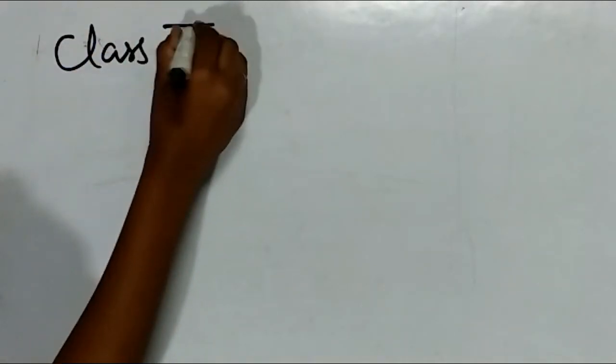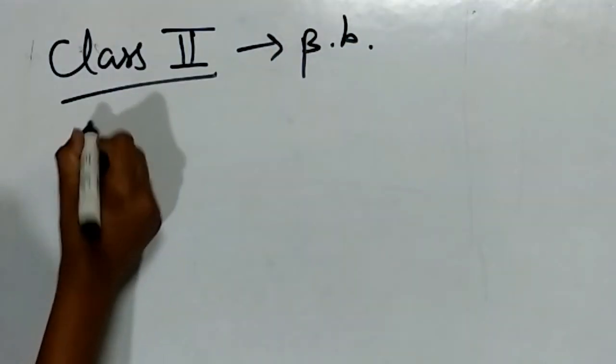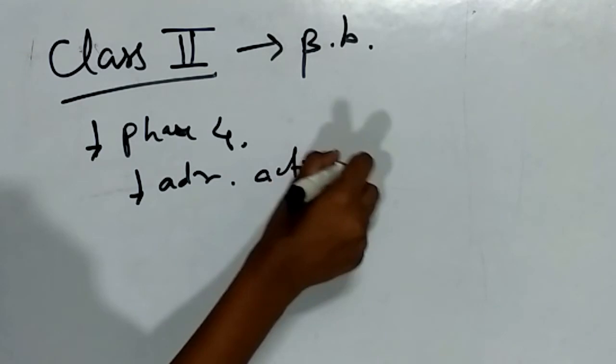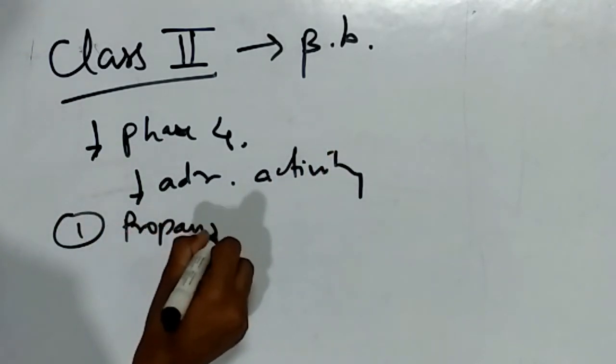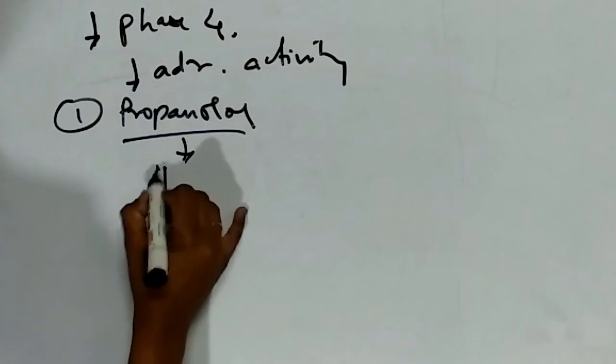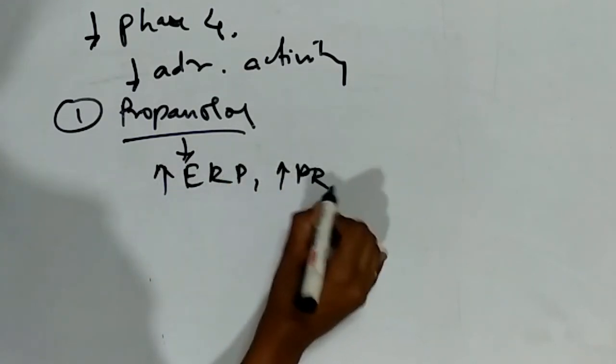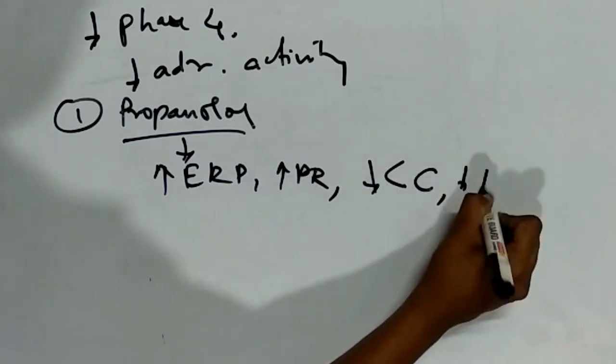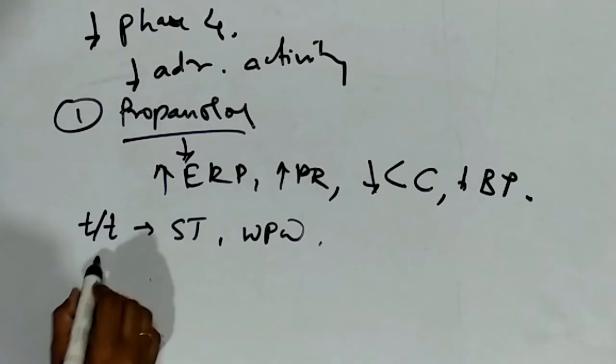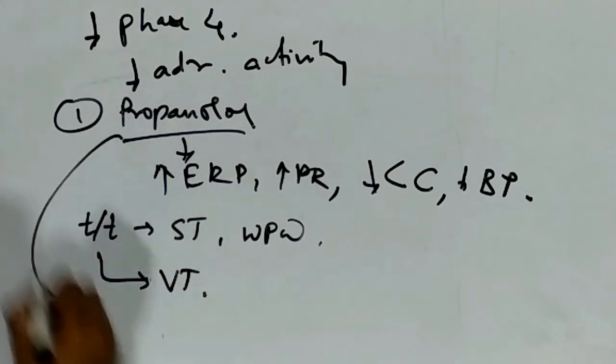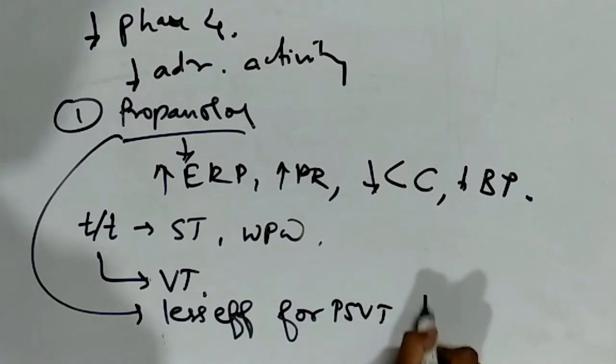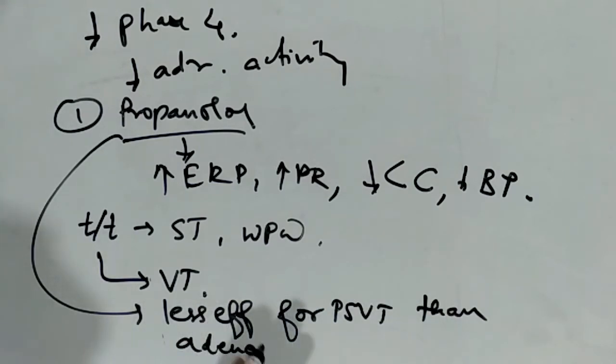Now we will see class 2 drugs. Class 2 drugs are beta blockers. These decrease phase 4 and also decrease adrenergic activity. The first drug is propranolol. Propranolol increases ERP, increases PR, decreases cardiac contractility, and decreases blood pressure. It is mostly used for sinus tachycardia, Wolff-Parkinson-White syndrome, and ventricular tachycardia.